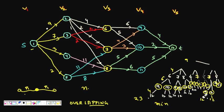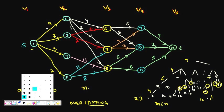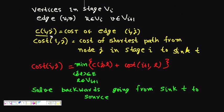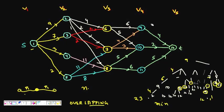Let's formulate the recurrence relation. We define cost(i,j) as the cost of the shortest path from node j in stage i to the sink t. For example, cost(3,6) means the cost of the shortest path from node 6 in stage 3 to the destination.